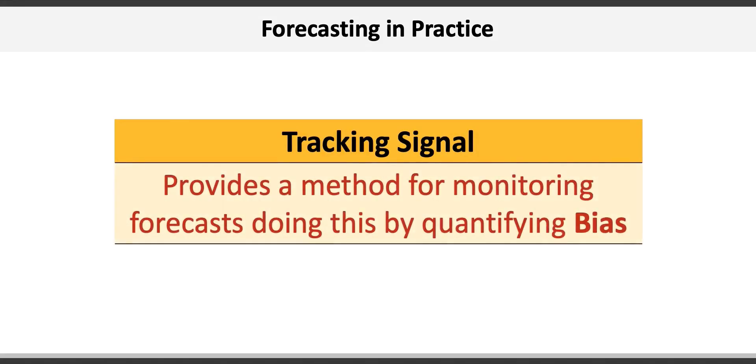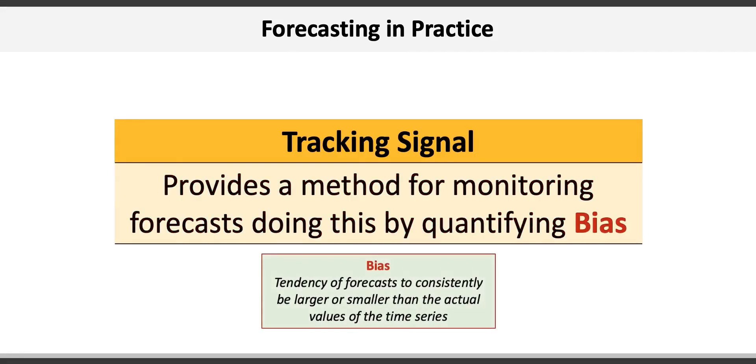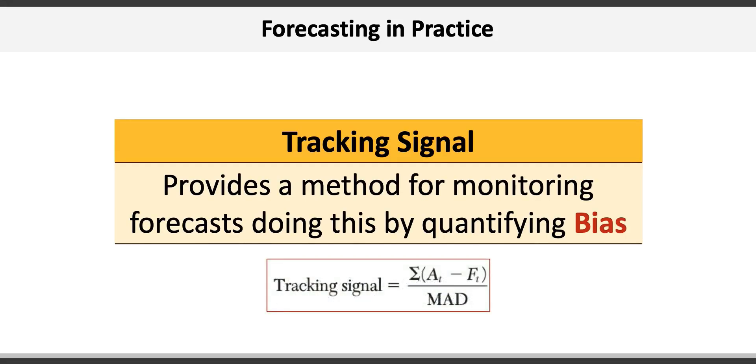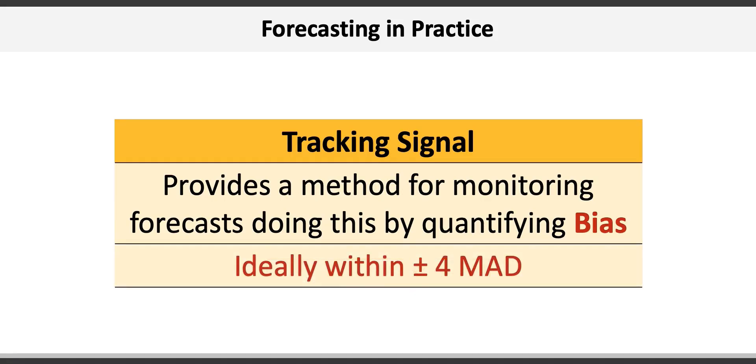A tracking signal is a method for monitoring forecasts by quantifying bias. Bias is simply the tendency of forecasts to be consistently larger or smaller than the actual values of the time series. For example, our forecasts may appear to be consistently lower than actual demand. The tracking signal is the sum of cumulative differences of the individual and forecasted values divided by the mean absolute deviation. Ideally, a tracking signal is within plus or minus four mean absolute deviations, or MADs.